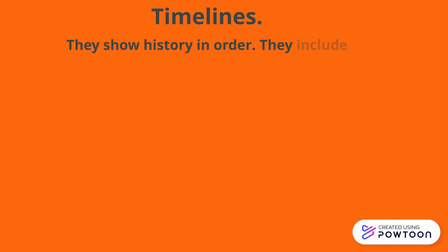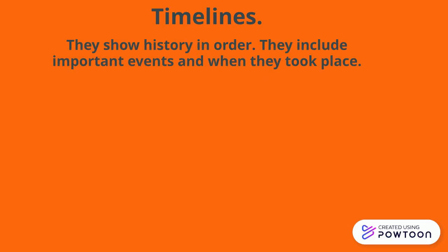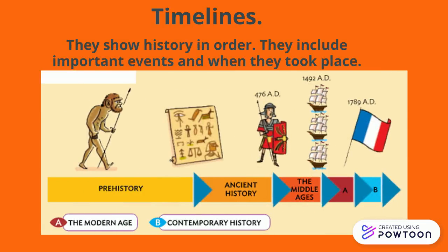Timelines show history in order. They include important events and when they took place. Here you can see an example of a timeline with the ages of history. You can see prehistory, ancient history, the Middle Ages, the modern age, and contemporary history, with images explaining everything.